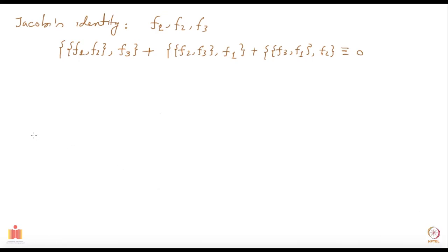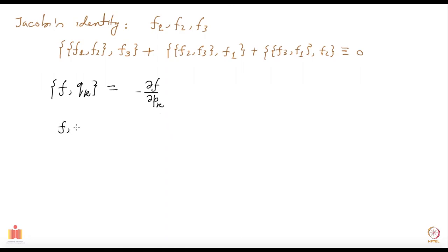If you take the Poisson bracket of a function f with a coordinate q_k, you get the partial derivative of f with respect to the conjugate momentum p_k with a minus sign. And if you take the Poisson bracket of f with p_k, you get del f over del q_k. So you can generate the partial derivatives of functions by constructing Poisson brackets.